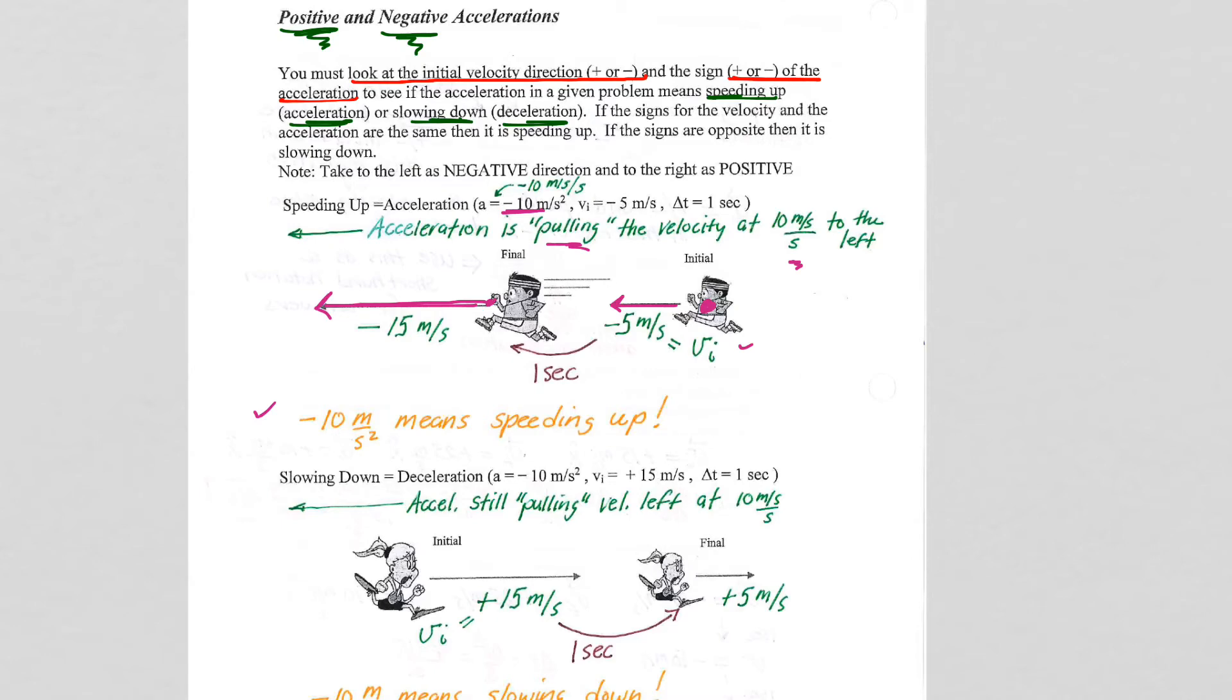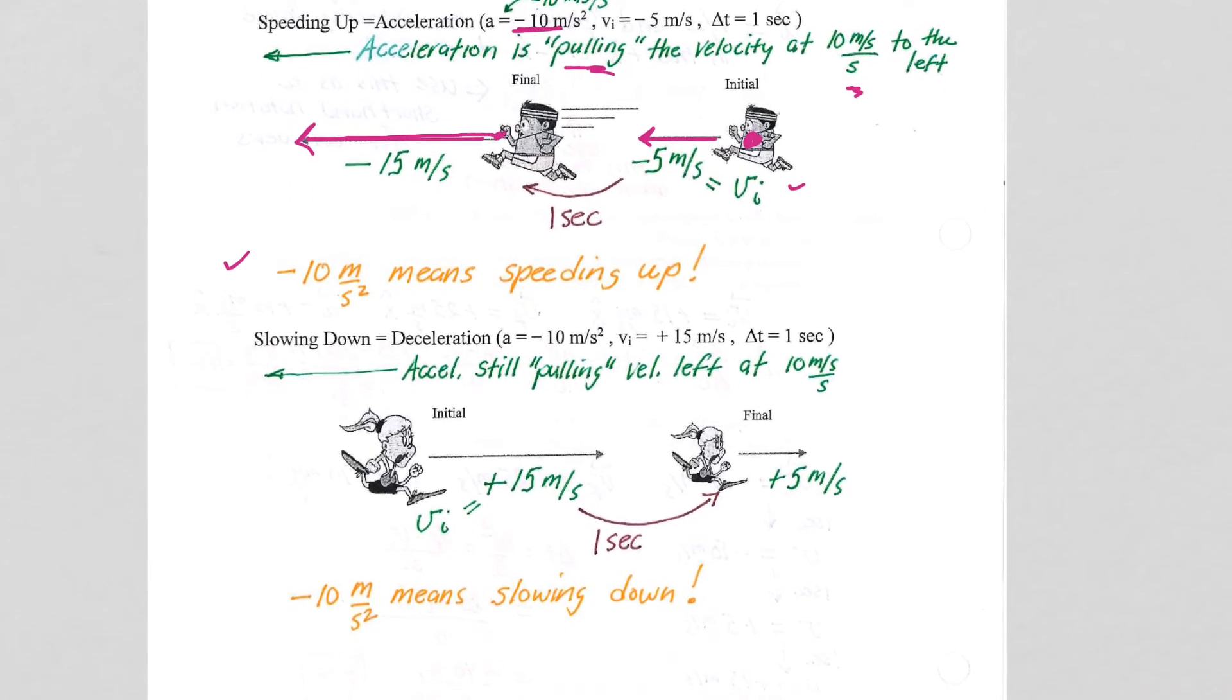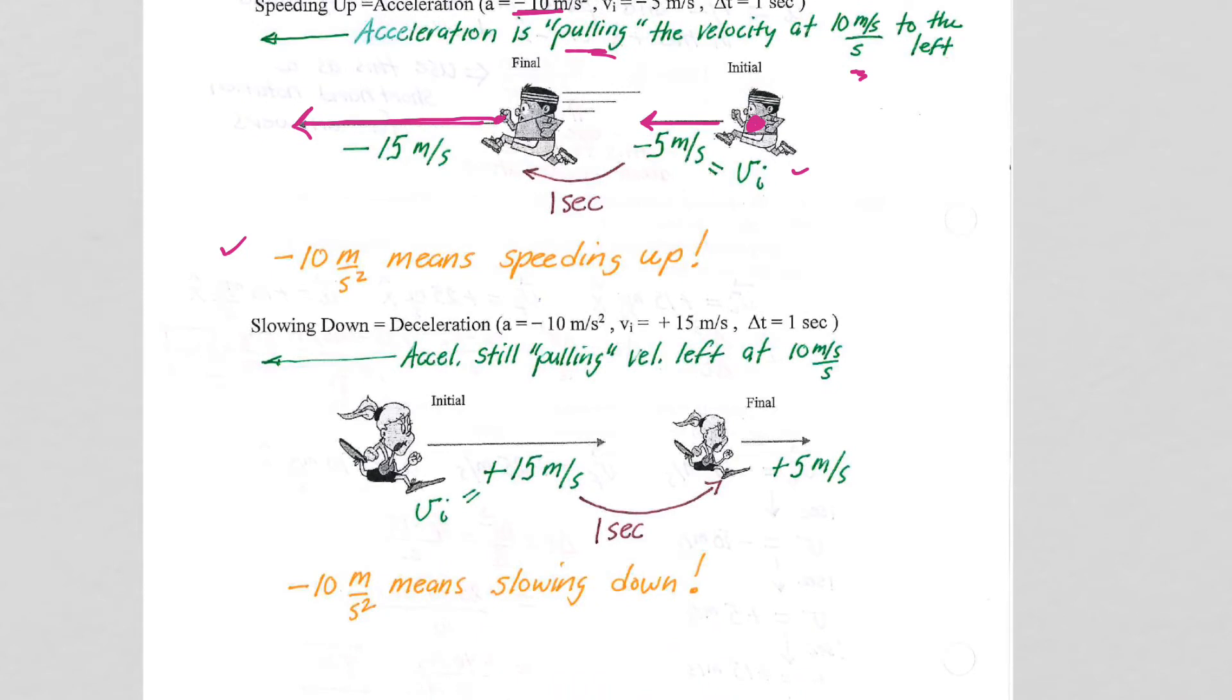Well, negative 10 can also mean slowing down. What if, instead of initially going backwards, we were initially going forward? Well, the acceleration is still pulling to the left at 10 meters per second every second. So, we are indeed slowing down. So, our negative 10 meter per second squared acceleration in this example means decelerating, slowing down.